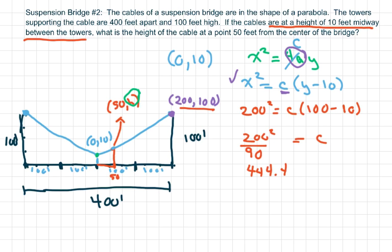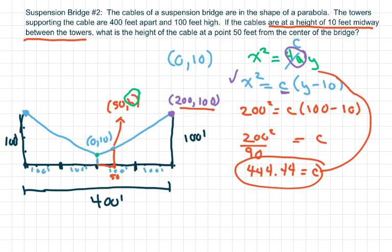That equals 444.44, so C equals 444.44. Now we're going to plug this back into our equation to get x² equals 444.44 times (Y minus 10).